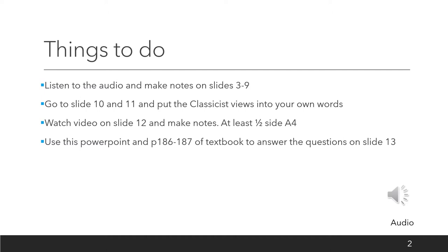Then go to slides 10 and 11 — you'll find the slide numbers at the bottom right hand corner. On slides 10 and 11 you'll find classicist views: you'll find Paul Zanker and Alison Cooley, both of whom are experts in their field on Augustus. Put those classicist views about the Mausoleum of Augustus into your own words please.